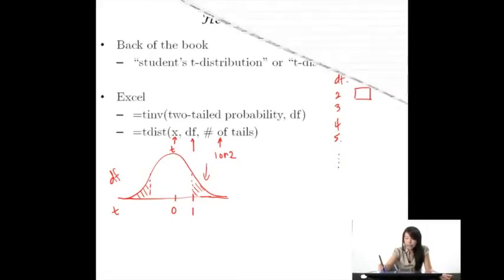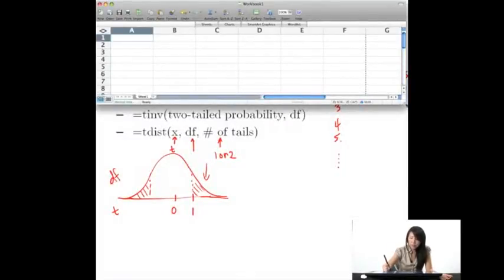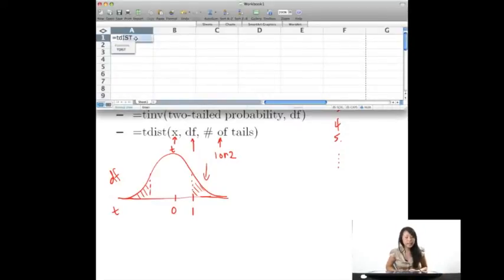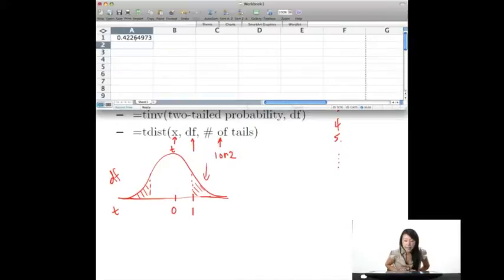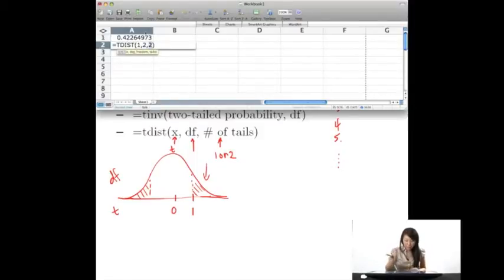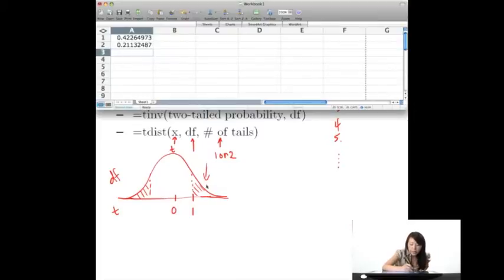Then it'll give you the probability of that area. So let's put in TDIST for a t of 1, comma, degrees of freedom 2, and let's look at what it says for two tails — it'll say 42%. And if you look at that same thing for one tail, it'll just divide this area in half, so 21% versus 42%. This is giving you both tail areas if you want two tails, but if you only want one tail, it'll just give you that one area.